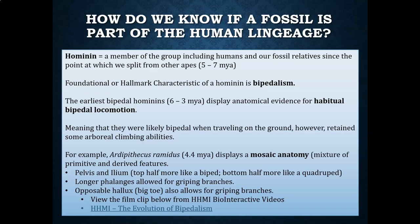However, they retained some arboreal climbing abilities. An example of a habitual biped would be Ardipithecus ramidus, which dates back about 4.4 million years ago. This particular fossil displays what we call a mosaic anatomy. That term mosaic means mixture of — so when we're talking about mosaic fossils, it means that those fossils display a mixture of primitive or older traits and newer or more derived traits.